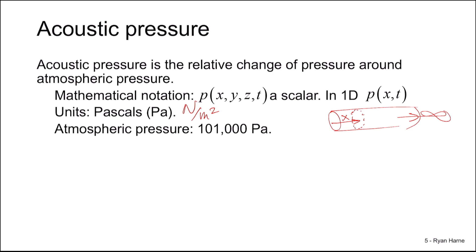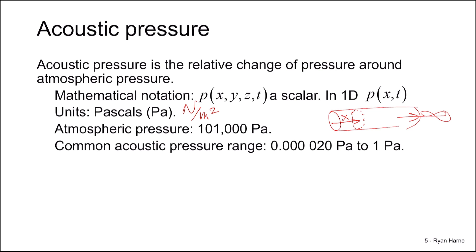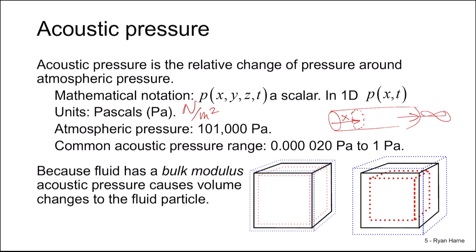It's important to recognize that atmospheric pressure is substantially greater than common acoustic pressures. Acoustic pressure is the relative change around atmospheric, so we're dealing with very small relative changes and we otherwise ignore atmospheric after this. Because fluid has a bulk modulus, acoustic pressure causes volumetric changes to the particle — small pressures produce small volumetric changes, and larger pressures produce larger volumetric changes. This is our first acoustic variable.